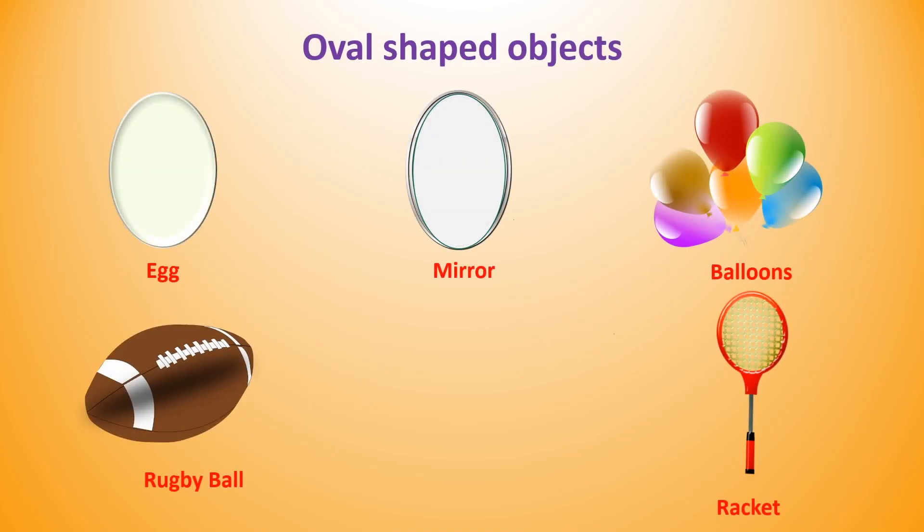Very common examples of oval shape are egg, mirror, balloons, rugby ball, and racquet.